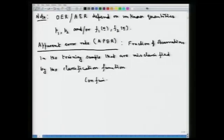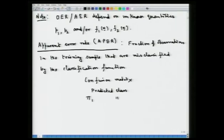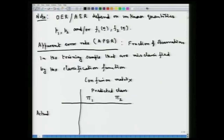Starting with the learning sample, cases are pre-classified. Based on those pre-classified cases, a classification rule is constructed. Using the sample classification rule, one classifies those pre-classified examples in the learning sample. One then looks at the confusion matrix, which has predicted class memberships on one axis — pi1 and pi2 for the two-class problem — and actual class membership on the other axis, also pi1 and pi2.